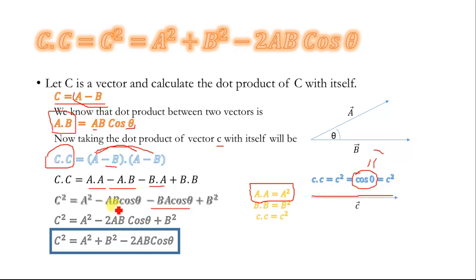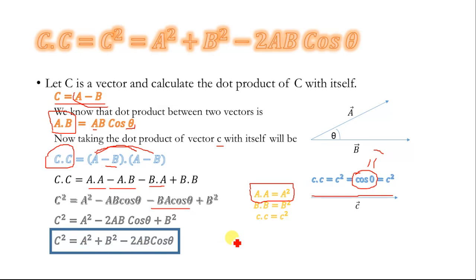It doesn't matter if we write it as ab cos θ or ba cos θ. So c squared equals a squared minus 2ab cos θ plus b squared, and finally we have c squared equals a squared plus b squared minus 2ab cos θ. This is the law of cosines.